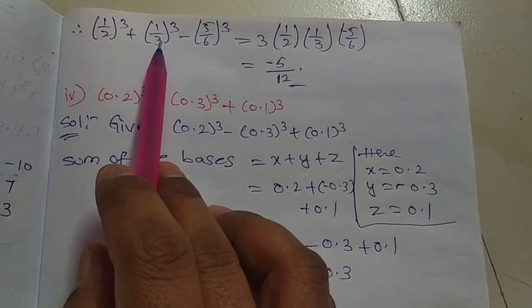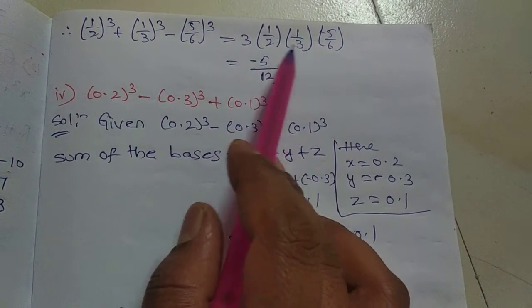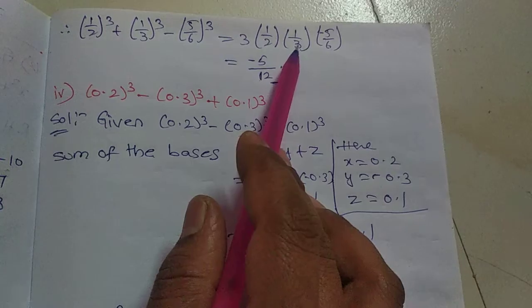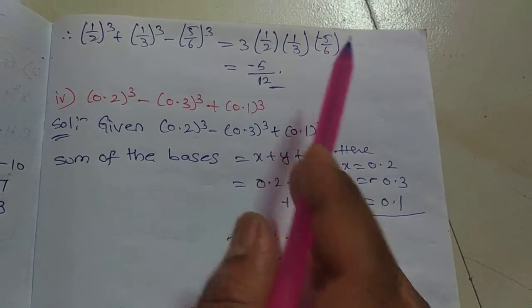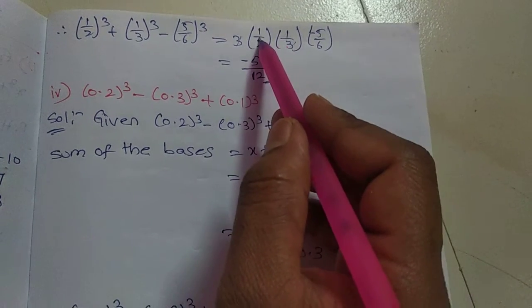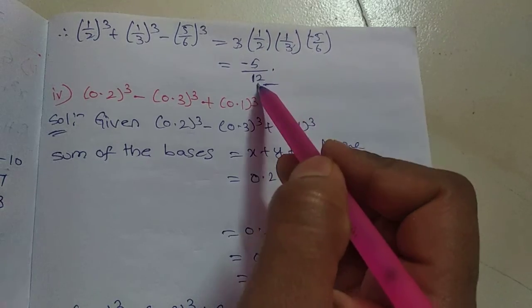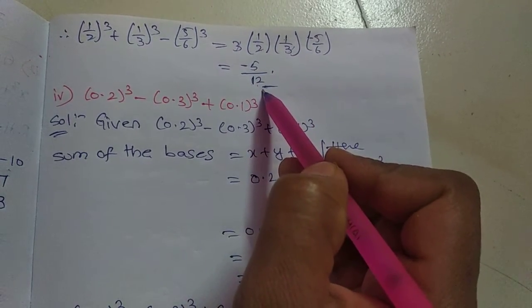So (1/2)³ + (1/3)³ + (-5/6)³ equals 3xyz. That's 3 × (1/2) × (1/3) × (-5/6). The 3s cancel. 1 × 1 × (-5) = -5, and 2 × 6 = 12. So the answer is -5/12.